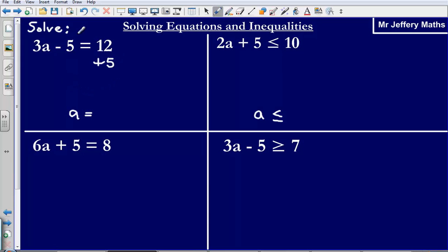By adding 5 that gets rid of the negative 5 and so what we are left with is 3A is equal to 12 plus 5 which gives us 17.